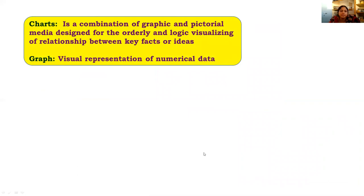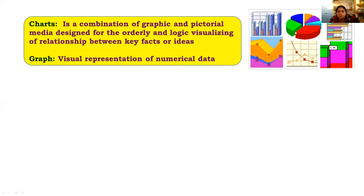The first type is charts. Charts are a combination of graphic and pictorial media designed for the orderly and logical visualization of relationships between key facts or ideas. There are different types of charts — pictorial charts, continuous charts, relay charts, and so on. In the next class I will cover different types of charts and graphs, but these charts will represent graphics or pictures that give complete information or visualization of the relationship between facts we want to convey to the farmers.